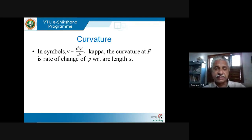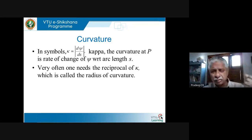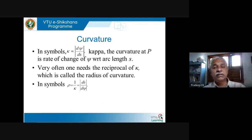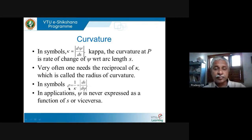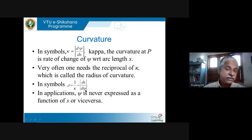Curvature kappa is defined as d(psi)/ds, where psi is the angle made by the tangent with the positive x-axis and s is the arc length. This is called curvature. The reciprocal of curvature is known as the radius of curvature, denoted rho. So rho = 1/kappa = |ds/d(psi)| — that means how the arc length changes with respect to the angle. That is what is important and that is the radius of curvature.